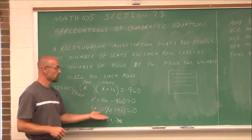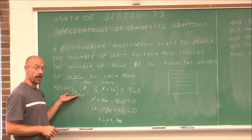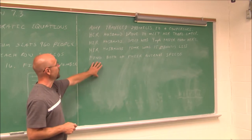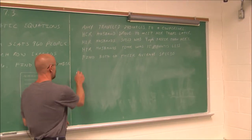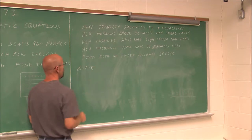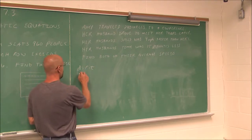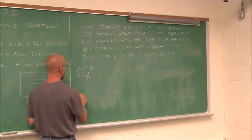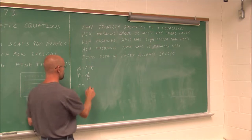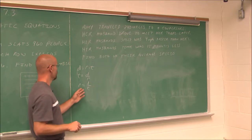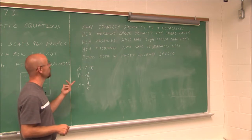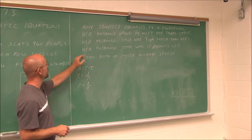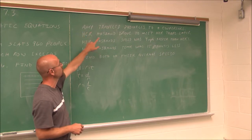We answered the question using a quadratic equation. Now let's look at another example involving a distance, rate, and time equation. Hopefully we know that distance equals rate times time, or any variation — time equals distance over rate, or rate equals distance over time. When I read this problem, I know it's a distance, time, or rate equation, because it says Amy travels 240 miles to a conference.